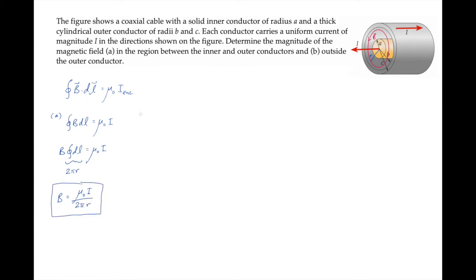In part B, we're asked to find the magnetic field magnitude outside of the two conductors. In this region, we can see from symmetry that if there is a magnetic field, it will circulate around the wires, so we can take an Amperian loop along the same path.